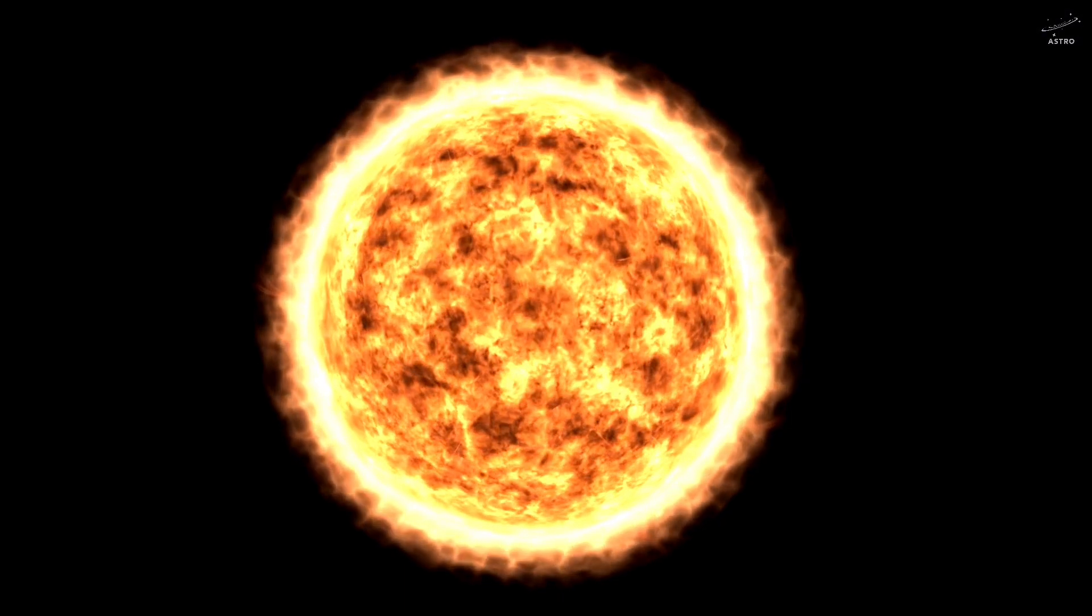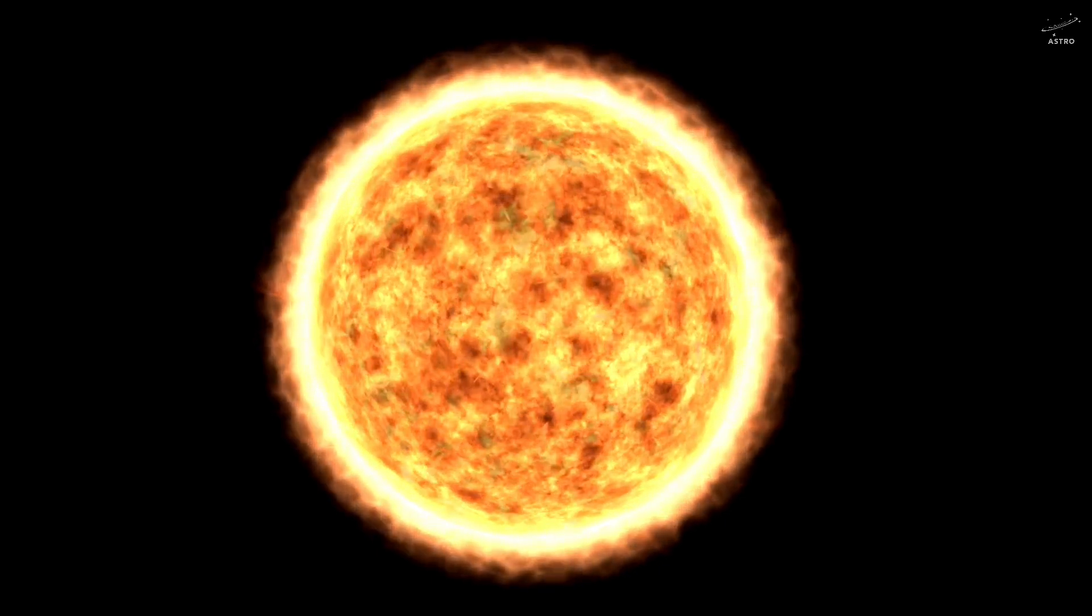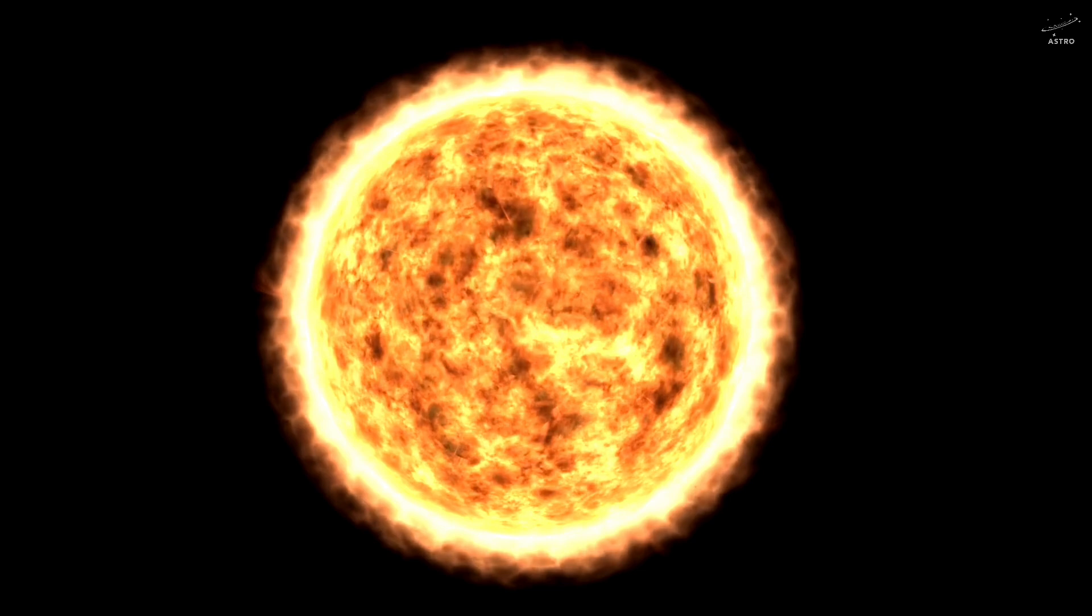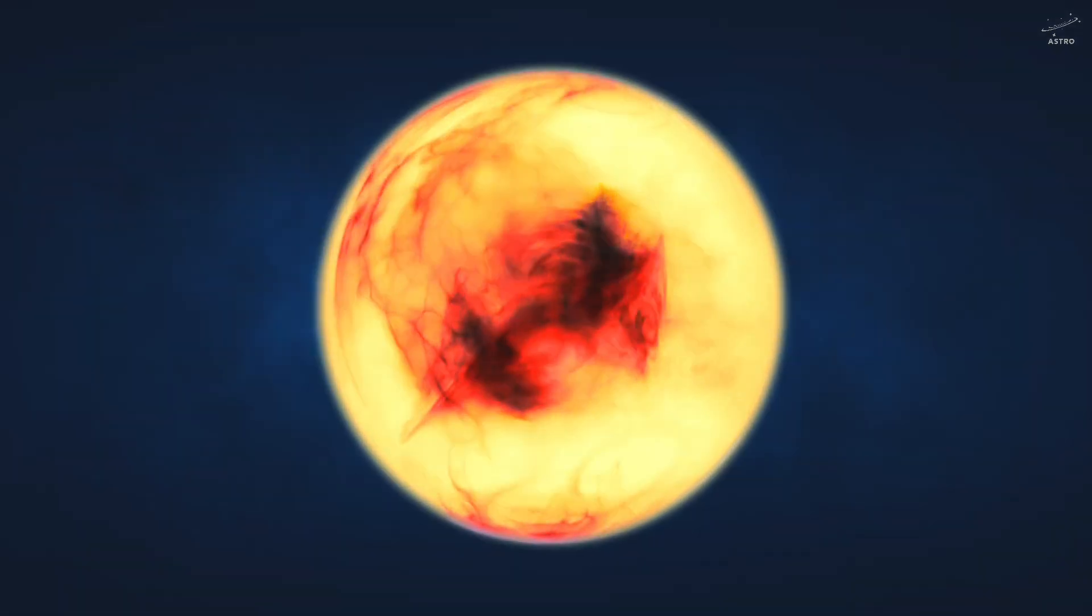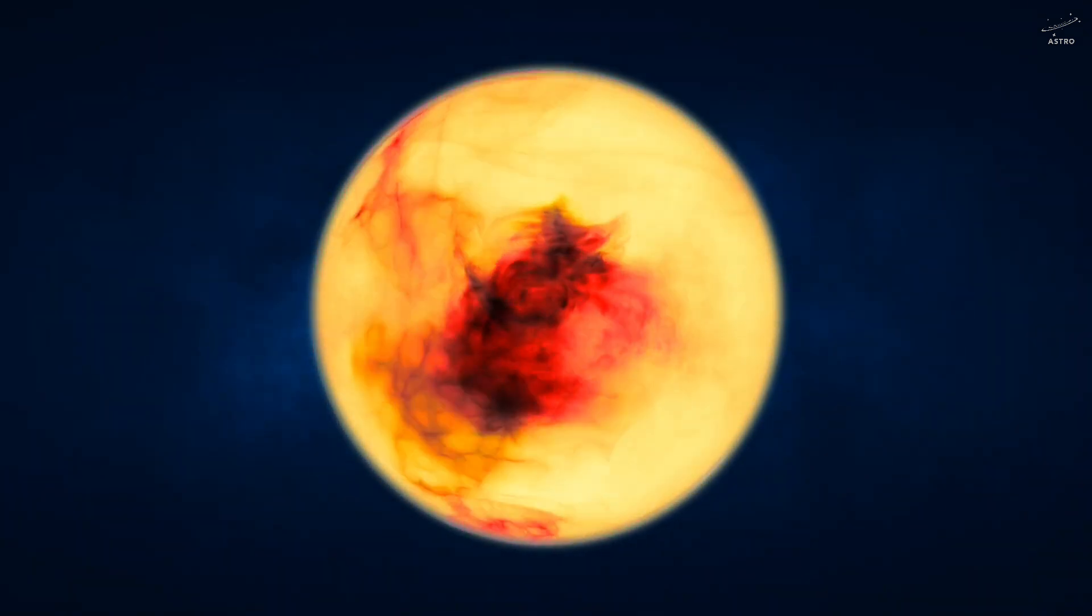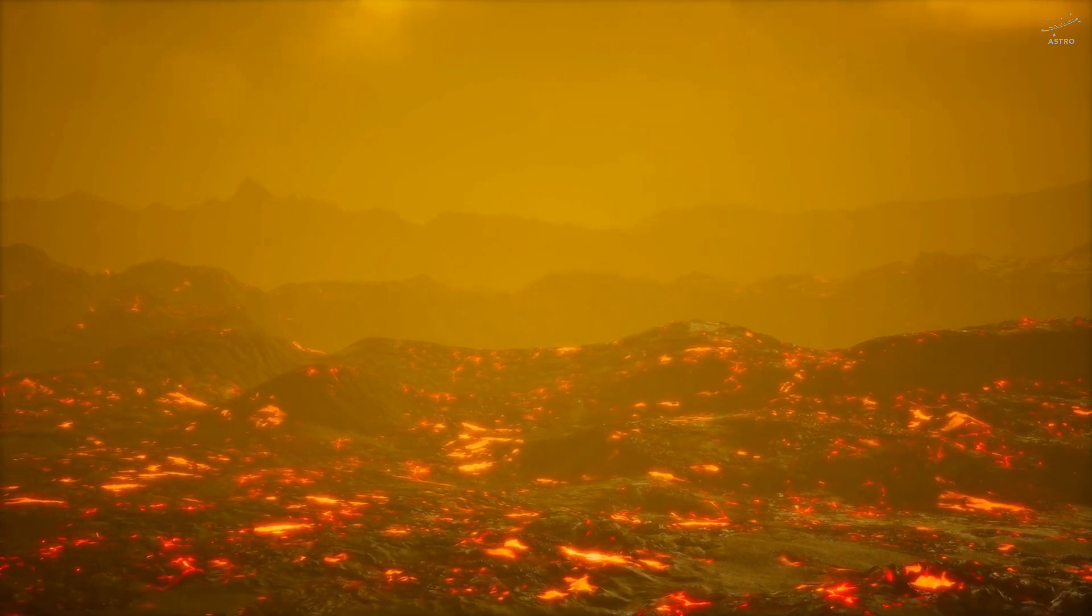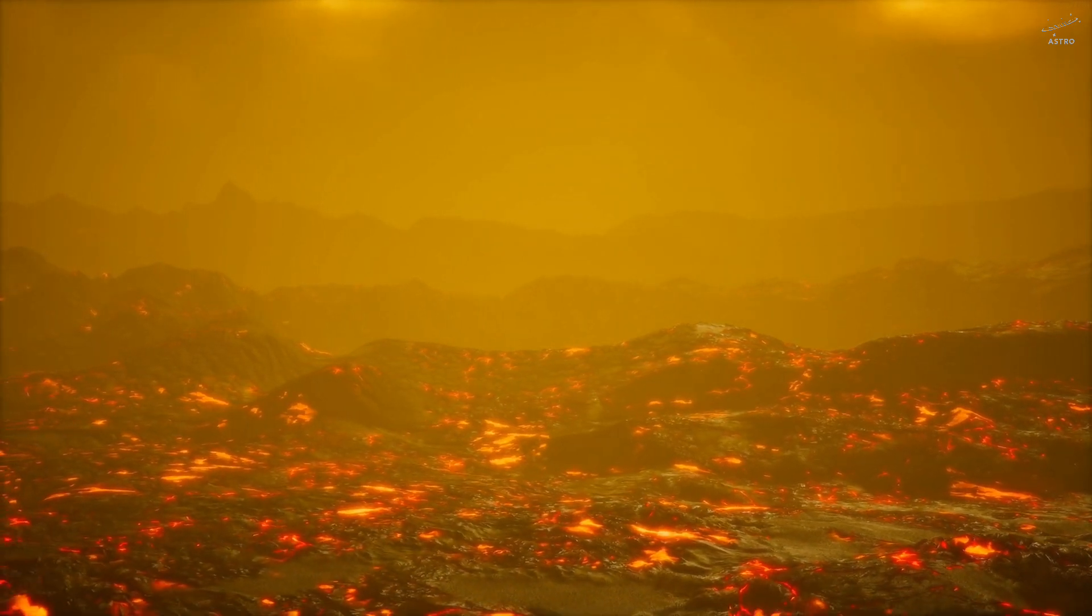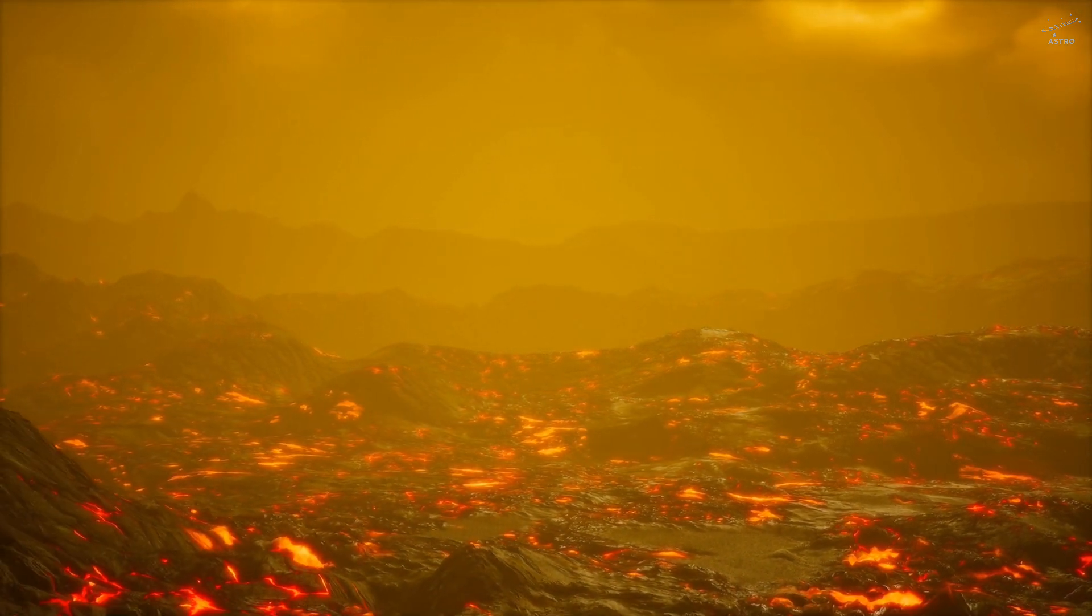Once Mercury crosses the threshold and enters the sun's outer shell of plasma, the question isn't if it will be destroyed, it's how. And the answer is slow, peaceful, almost meditative. At this stage, Mercury becomes something ancient, something lonely, a single fragment of matter drifting in a sea of fire.